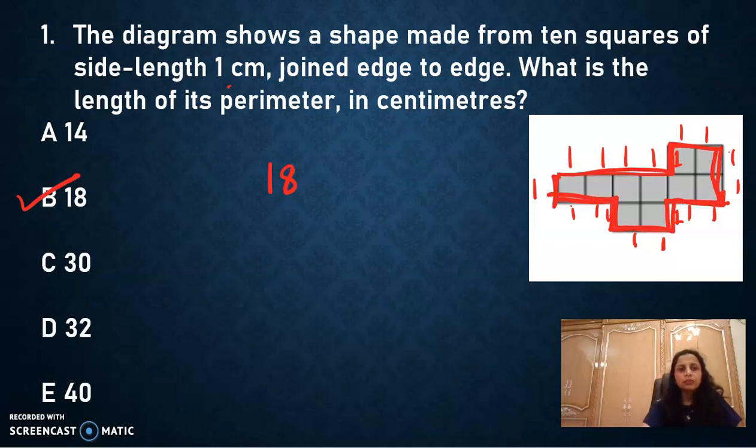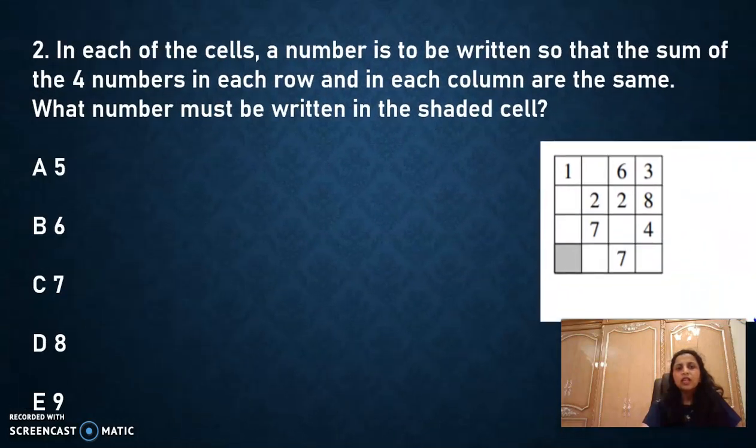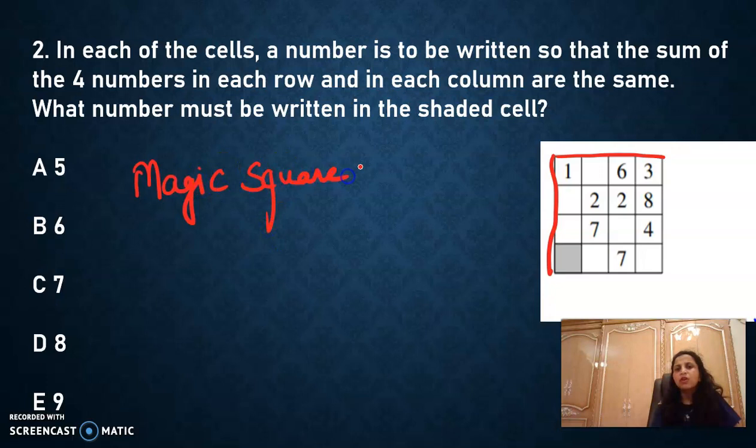Let's go to question number 2. So here you can see, they speak about in each of the cells, a number is to be written so that the sum of the 4 numbers in each row. So when we are talking about rows, each row and each column will have a specific sum. But you don't know the sum. The sum is not given, right?